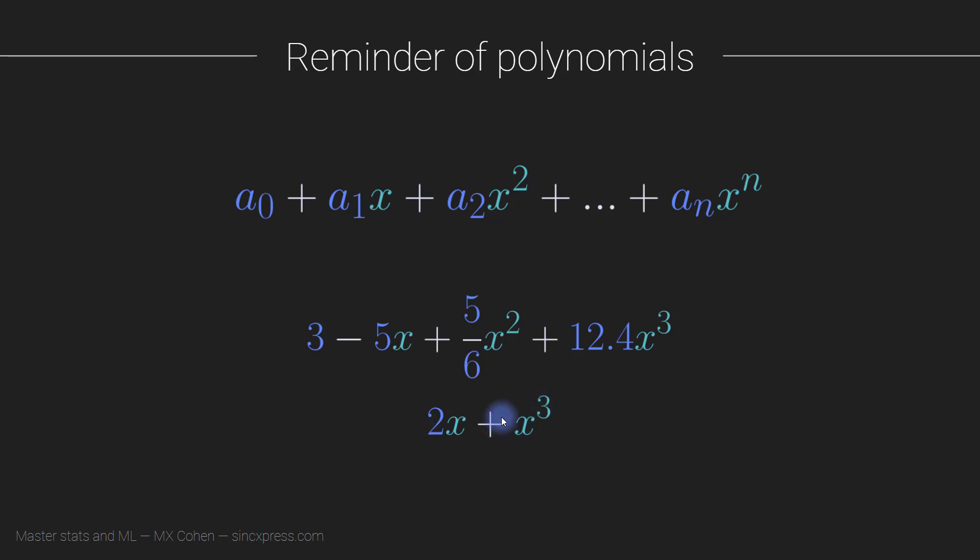There's another concept in polynomials, which is called the order. The order of a polynomial is basically n here, it's the highest coefficient. This is an nth order polynomial, this is a third order polynomial, this is also a third order polynomial. Sometimes people get confused because there's only two terms, but the order of a polynomial doesn't refer to the total number of terms, it refers to the largest exponent in any of the terms.